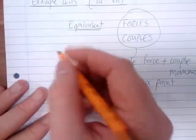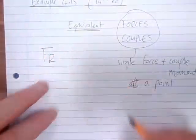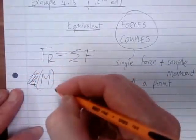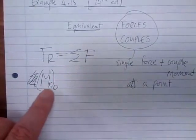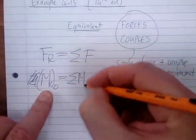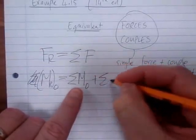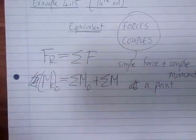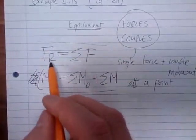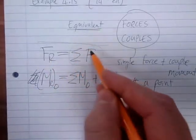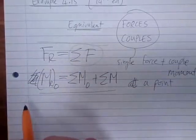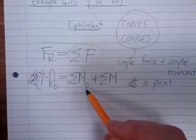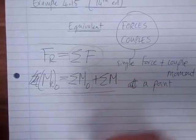The equations we need are: our resultant force, which is just the sum of all the forces; and our resultant couple moment M_R0, which is equal to the sum of all the moments due to the forces, plus all the existing couple moments. We need to find the resultant force, place it at the point of interest, calculate all the moments due to those forces about that point, and include all the existing couple moments.